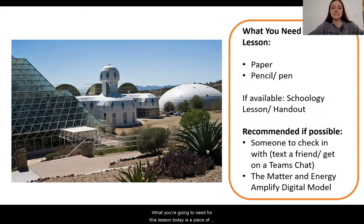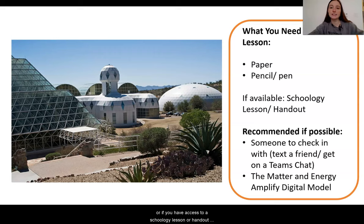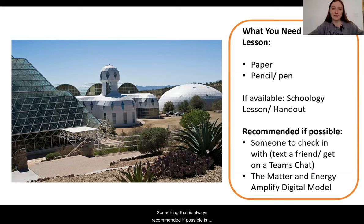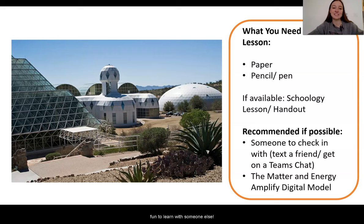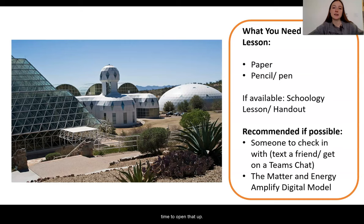What you're going to need for this lesson today is a piece of paper to jot down some notes, a pencil or pen, or if you have access to a Schoology lesson or handout from your teacher, now would be a good time to get that out. If possible, find a family member or a friend to message or text over the next 20 to 25 minutes so you can share ideas and ask questions — it's just more fun to learn with someone else. We're also going to be using the digital model in Amplify today, so if you have access, now would be a great time to open that up.